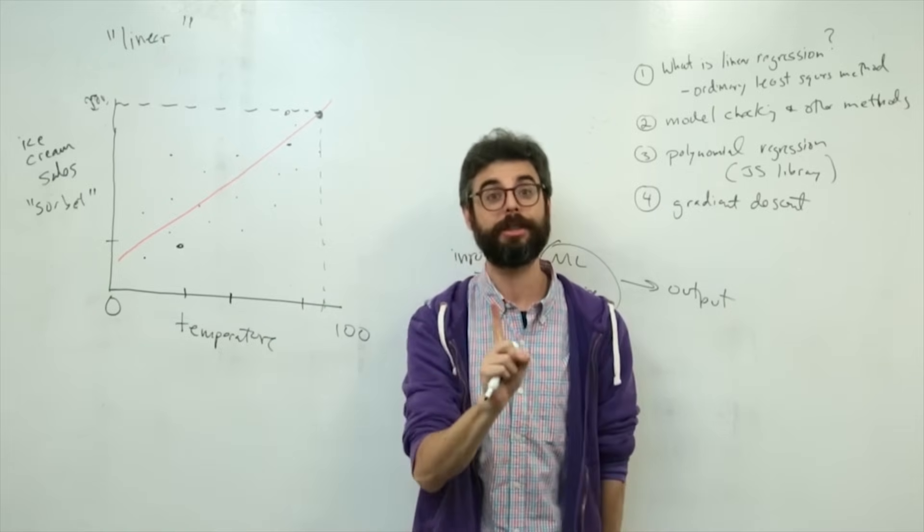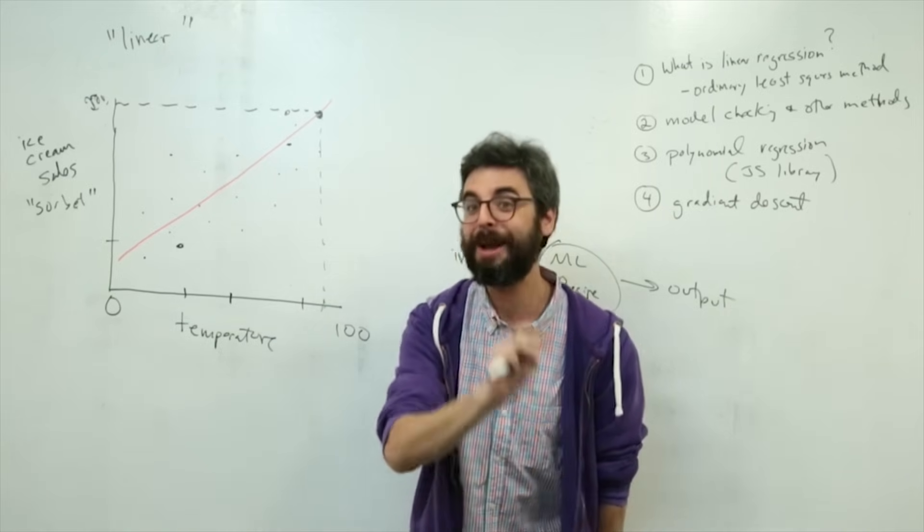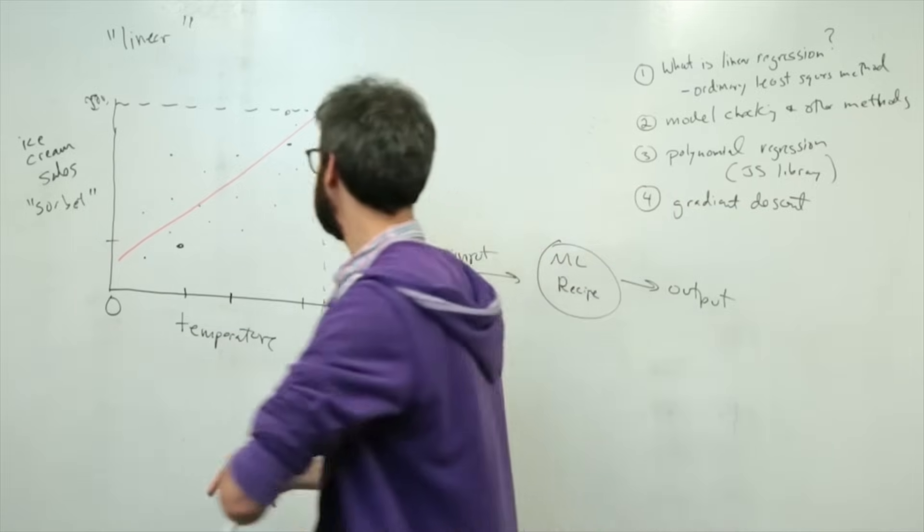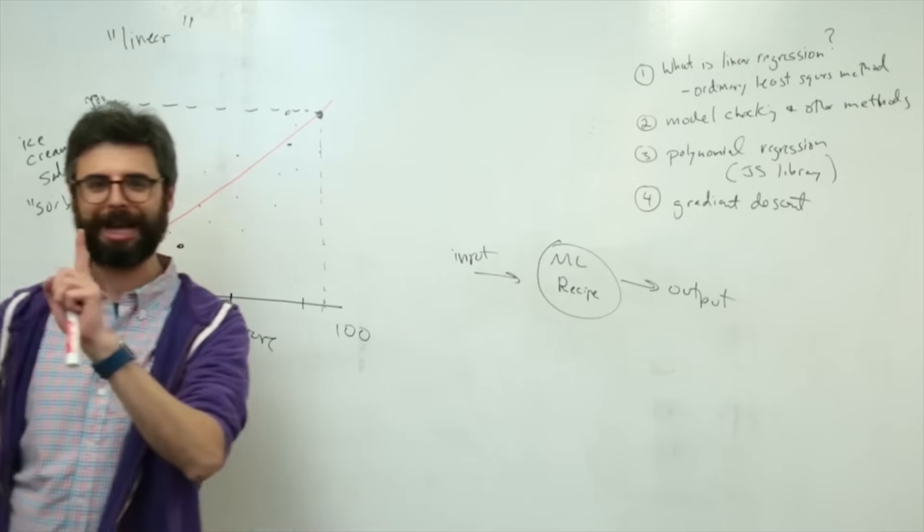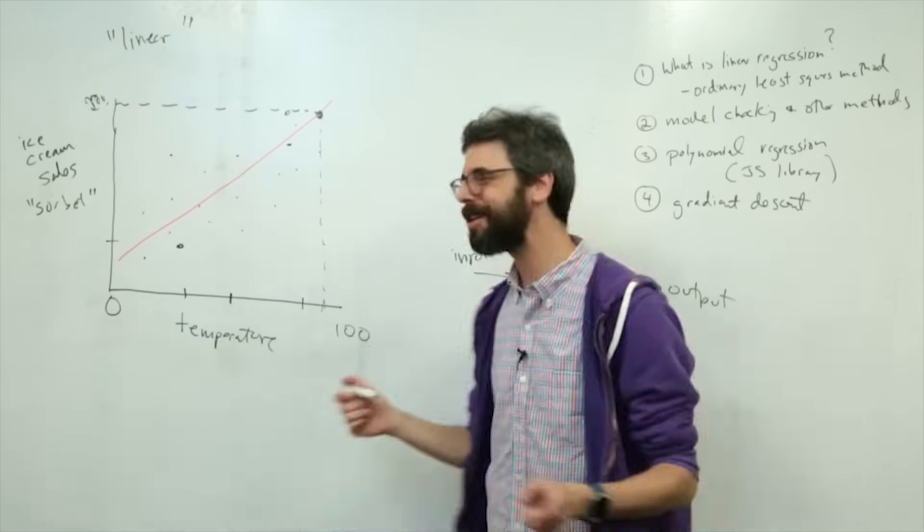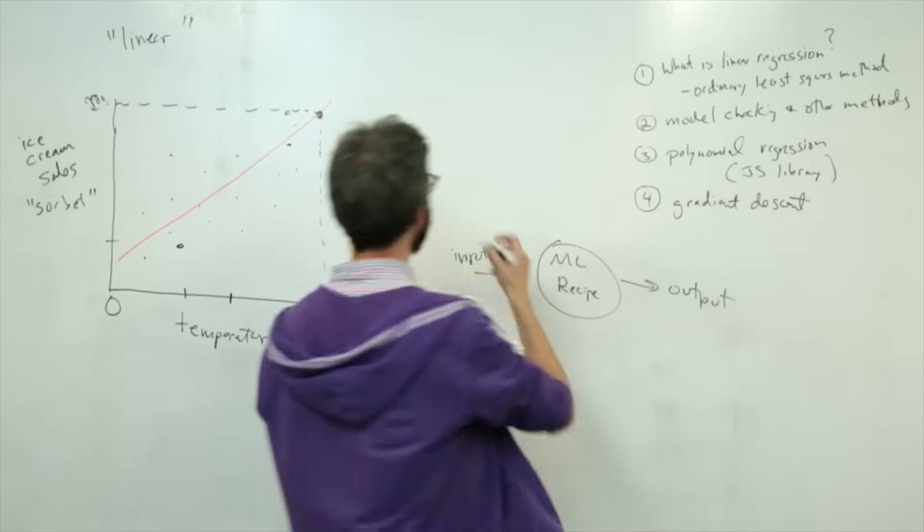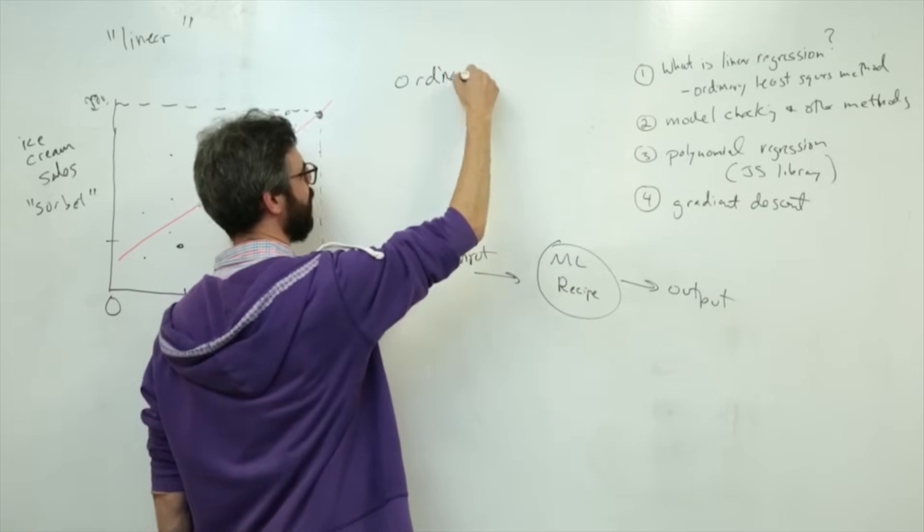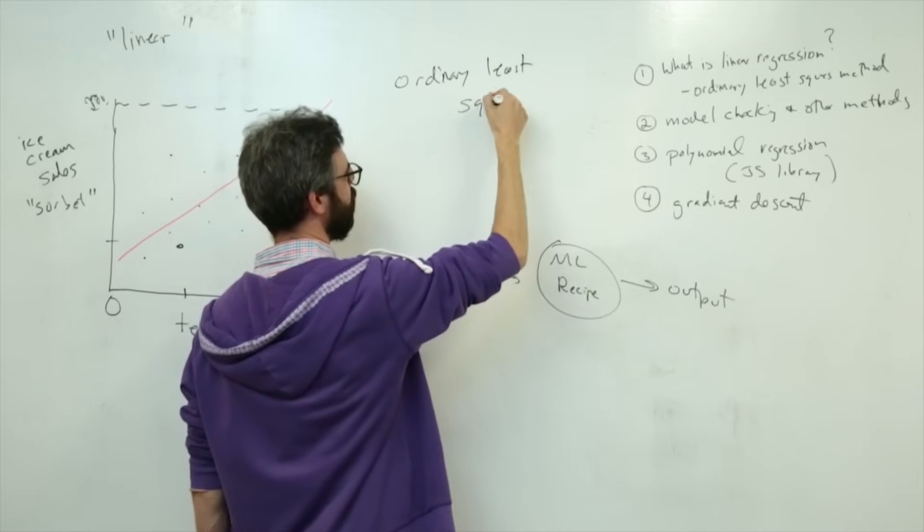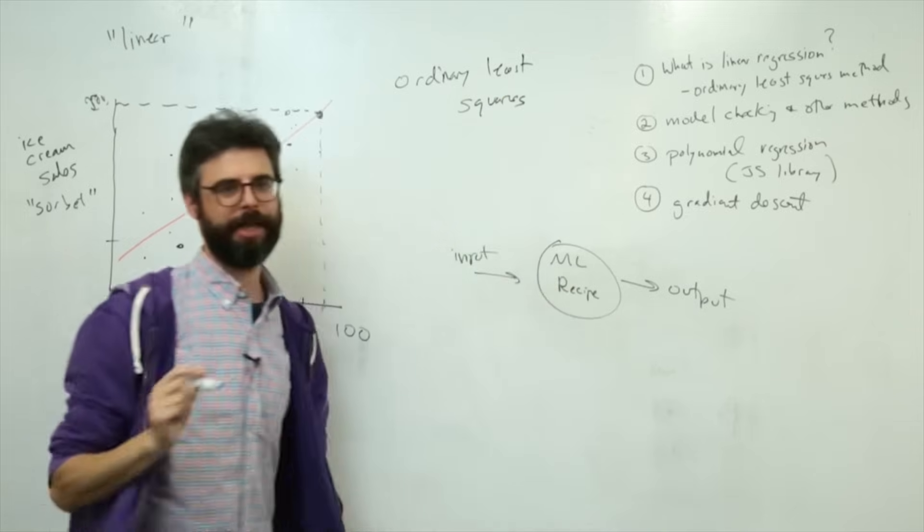Now, how do you do this? There are many different methods. And I'm going to look at multiple methods in different videos. In this video, I would like to discuss the method called ordinary least squares. What does that mean?